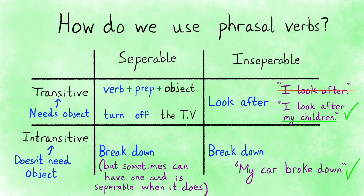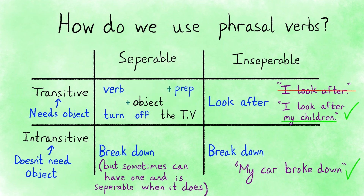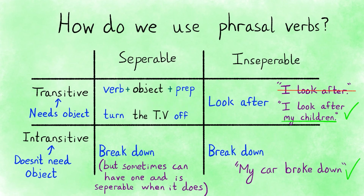Separable means you can separate the two parts of the phrasal verb and put the object between the verb and the preposition. So we can say turn off the TV or turn the TV off, because turn off is a separable phrasal verb.